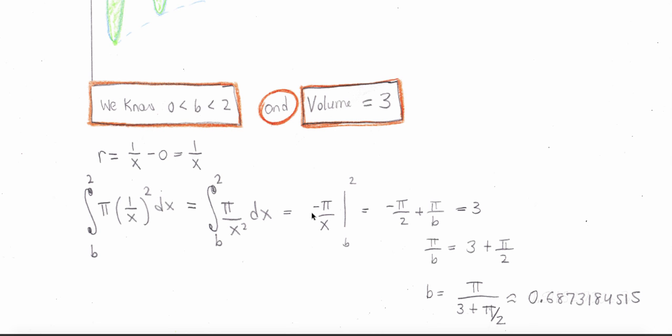The antiderivative is negative pi over x from b to 2. Evaluating gives me negative pi over 2 plus pi over b equal to 3 because that's what the volume needs to be.